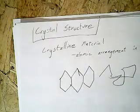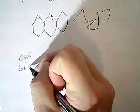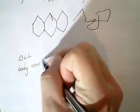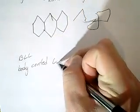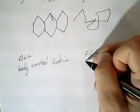There are really three types of crystalline shapes that we'll talk about in this class. There's body centered cubic, which is BCC, and FCC, face centered cubic.